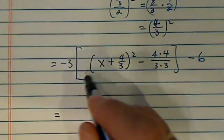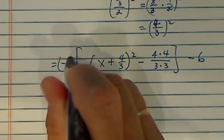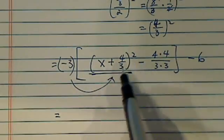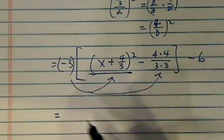Let's distribute this minus 3 into the first one, not inside the parentheses, but inside this whole bracket over here and distribute here.